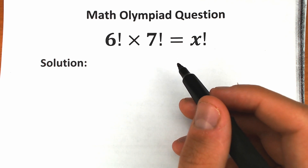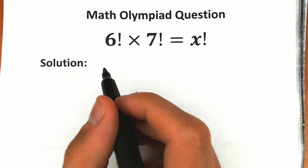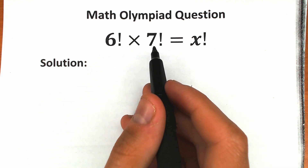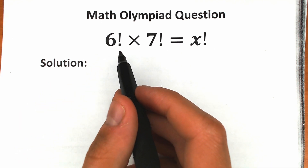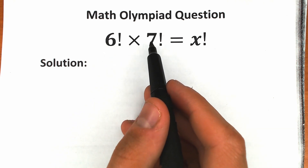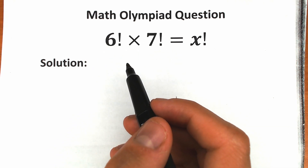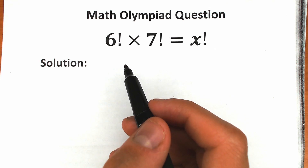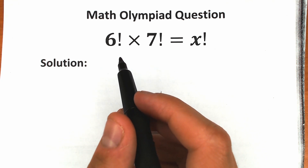First of all, I want to start with the most common mistake, because a lot of students think they can simply multiply the exponents. A lot of students write that the correct answer is 42 factorial — 6 factorial times 7 factorial is not equal to 42 factorial. This is not how it works, and I'm going to fully explain how to solve it correctly, step by step.